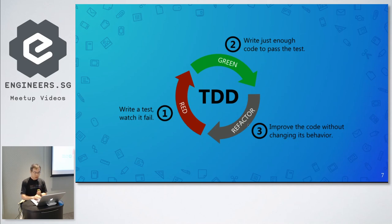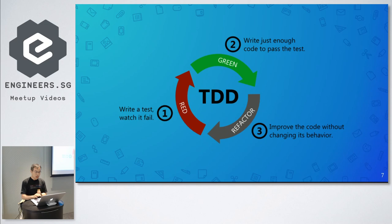The second step is to write some code to make the test case pass. In the third step, once you make the test case pass, the color of the test cases goes from red to green. After that, you can do some refactoring to make your code clean, easy to read, and easy to maintain. Once done with the third step, you go back to the first step, write another test case, make it pass, and then refactor.